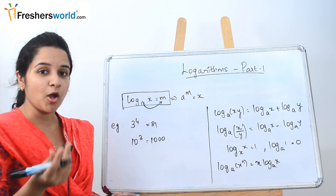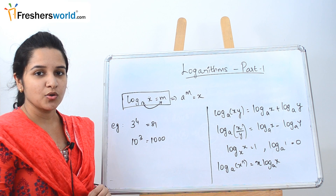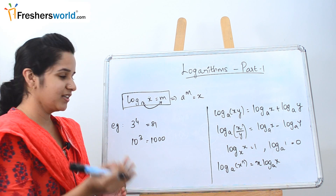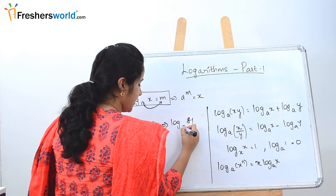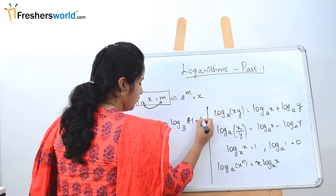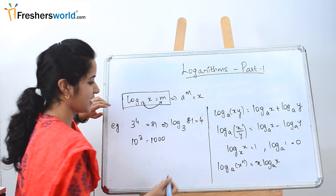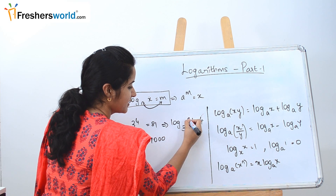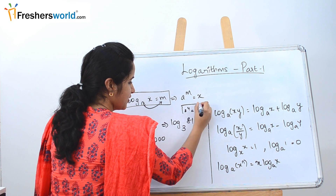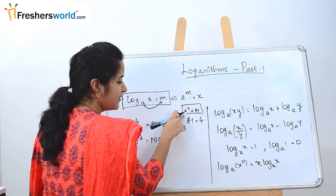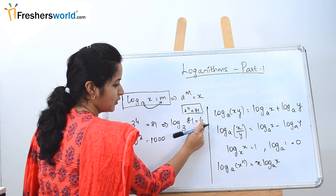For example, they give you 3^4 = 81 and we have to express that in log form. Log of 81 to the base 3 is equal to 4. If you substitute in the formula, 3 power 4 is nothing but 81, so log_3(81) = 4.